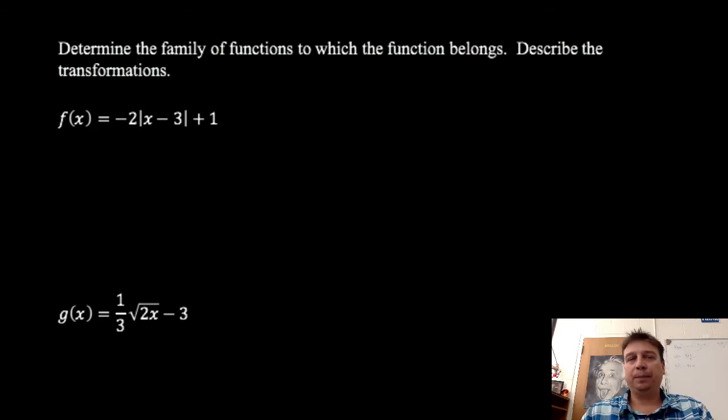So, we start here. Determine the family function to which the function belongs, and then describe the transformations. So, I want to figure out what family does this belong? I see this as absolute value, so that I know that this function will belong to the absolute value family of functions. That means, then, we know that the graph is going to look like a v, basically.